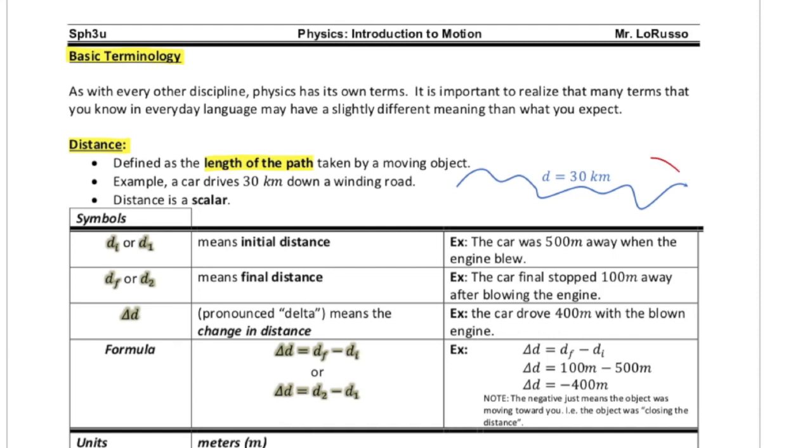Let's take a look at our diagram over here. So what we have is we have some object that is moving along a path like this. The total length, if you're to take this path and straighten it out, that total length would be 30 kilometers.